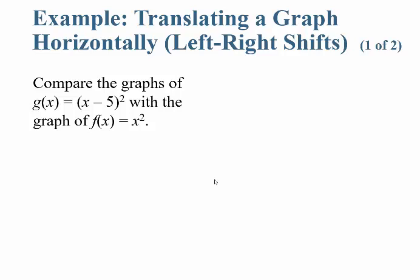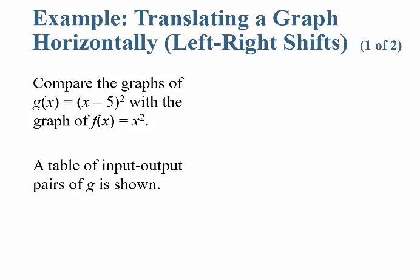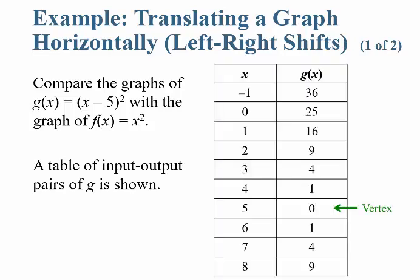Now let's compare the graphs of g of x equals (x minus 5) squared — notice the minus 5 is in parentheses — with f of x equals x squared. Notice when you plug in x equals negative 1, you get negative 1 minus 5 is negative 6, squared gives you 36. So the output values go 36, 25, 16, 9, 4, 1, and only when x equals 5 do you get 0.